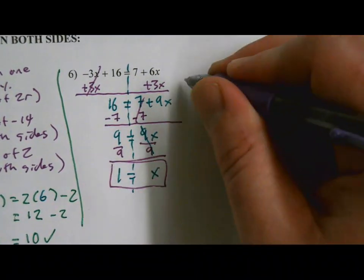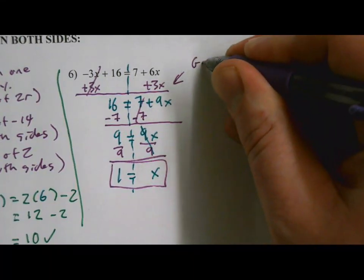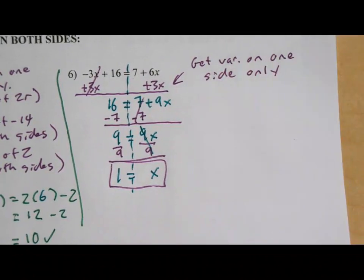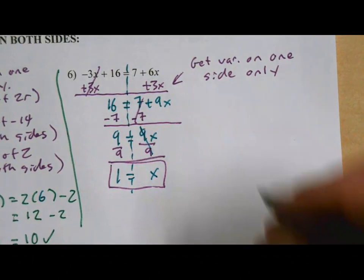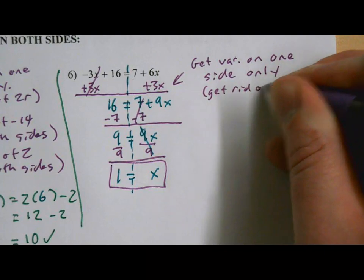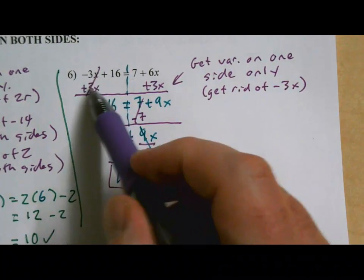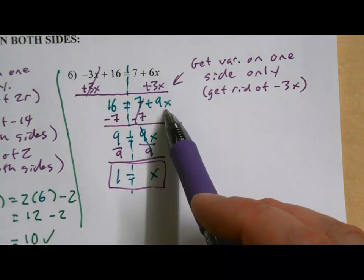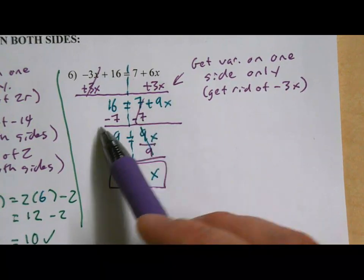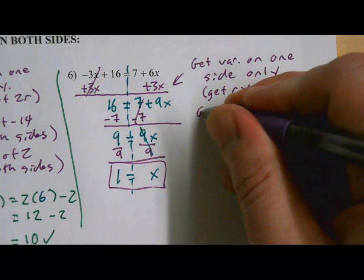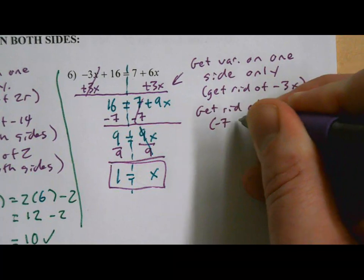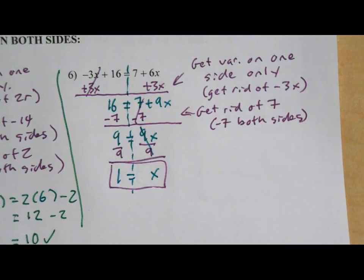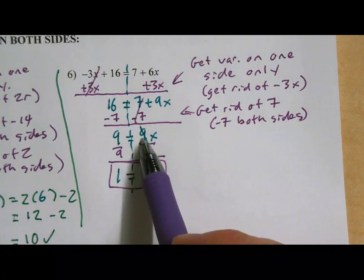Let's annotate first. So what do we do in this first step? The whole point here was to get the variable on one side only. We didn't want a variable on both sides. And we chose to get rid of the negative 3x over here. We did that by doing plus 3x on both sides. That got us to this step here. Now we only had an x on one side, so we worked to get that by itself. The next thing we did was minus 7 on both sides. We did that to get rid of this 7. And then in our final step, what did we do? We divided by 9 on both sides because we were trying to get rid of this 9 here.